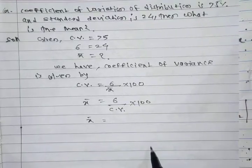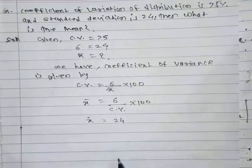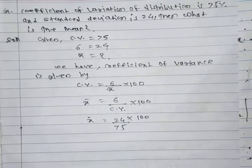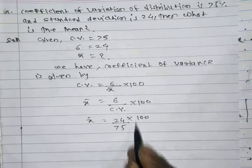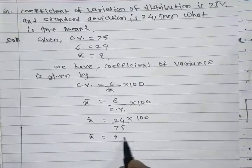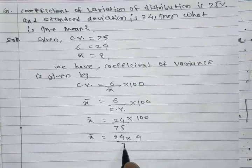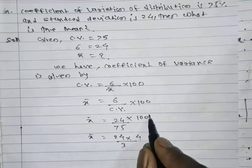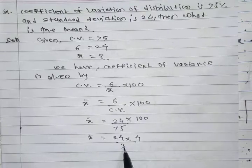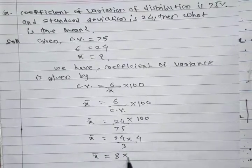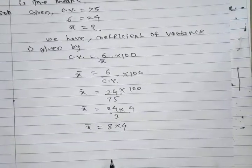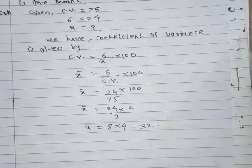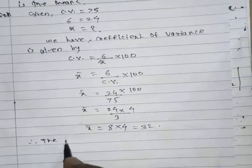Now we put the values: standard deviation is 24, multiplied by 100, divided by coefficient of variance which is 75. We simplify: 25 × 4 = 100 and 25 × 3 = 75, so 24 divided by 3 equals 8, multiplied by 4, giving 32. Therefore, the mean for the given distribution is 32.